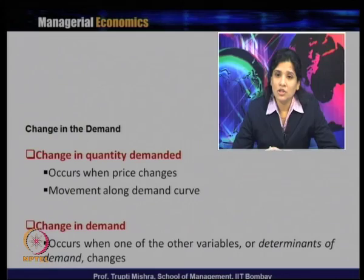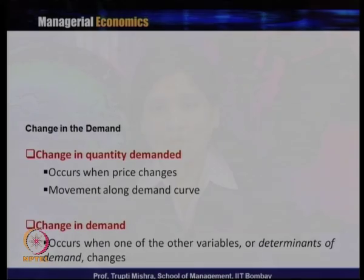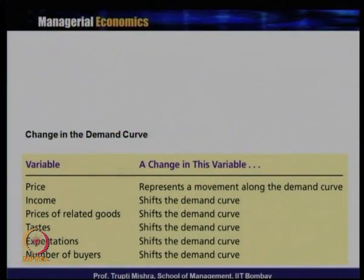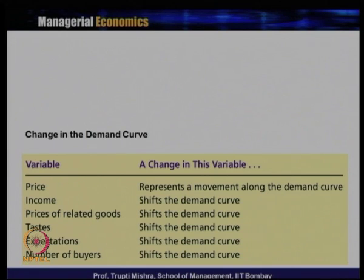Looking at the difference between these two: the first one - change in quantity demanded due to change in price - can be represented as movement along the demand curve. In the second case, we cannot reflect changes due to other factors along the demand curve; either the demand curve has to shift to the right or to the left. Changes in income, price of related goods, taste and preference, expected future price, or number of buyers in the market - all these cause the demand curve to shift rather than move along it.